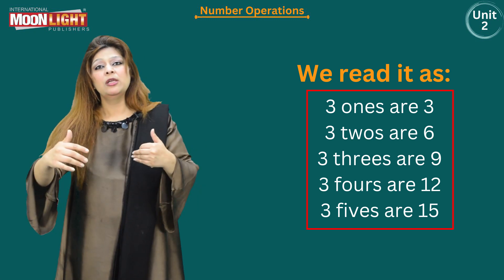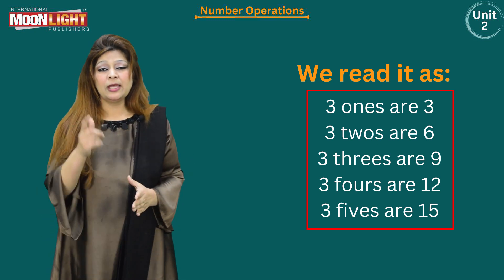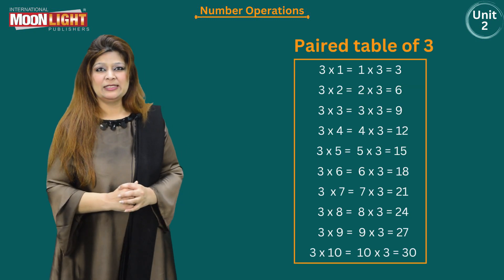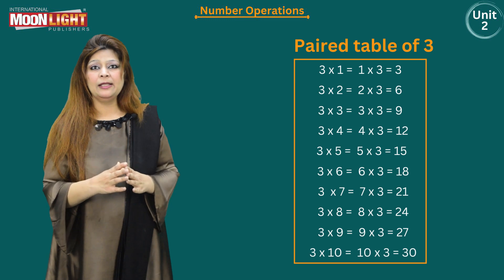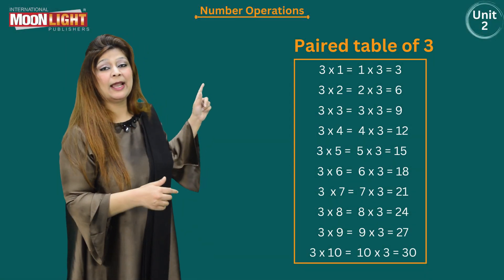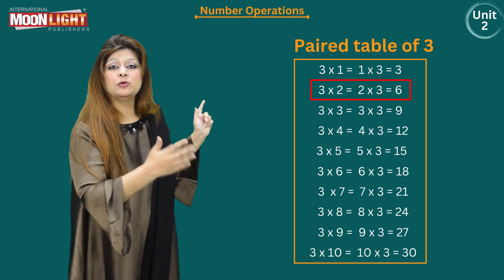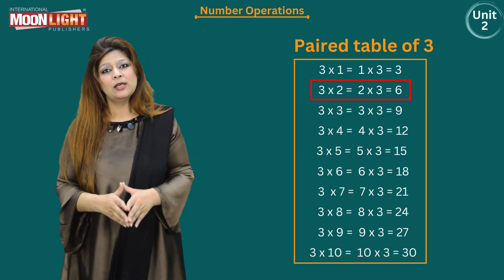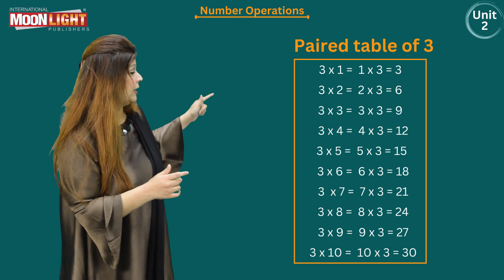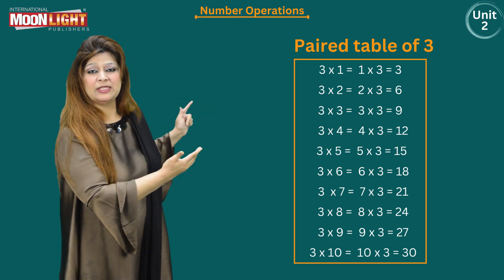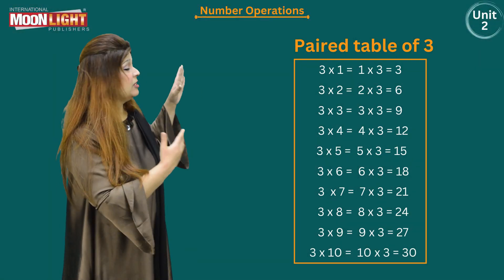Now I'm going to tell you a very important thing: the table is paired. Paired means that three ones are three, and one three is also three. Three twos are six, and two threes are also six. If you change the positions of the numbers, the answer stays the same.